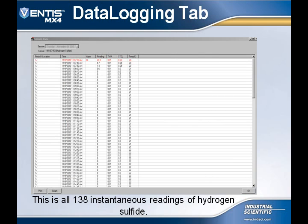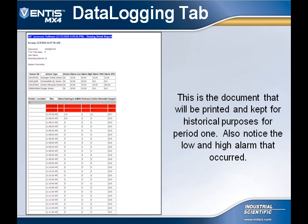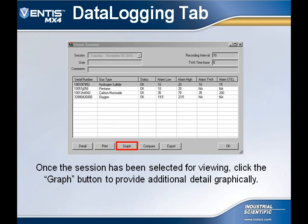There are 138 instantaneous readings that have been recorded. This is a list of all 138 instantaneous readings of hydrogen sulfide. Notice the very first reading is in red, which is an indication that the instrument was in alarm condition. The user can select the Detail button to look at all 138 instantaneous readings. Selecting the Print button will print a hard copy document for period 1. Notice again that the first two readings show the instrument was in an alarm condition.